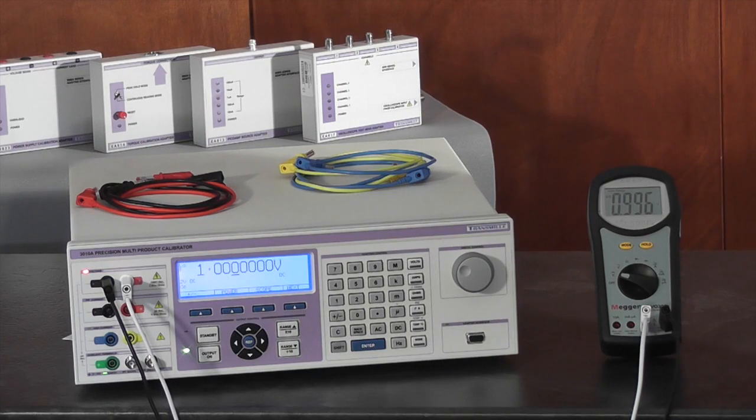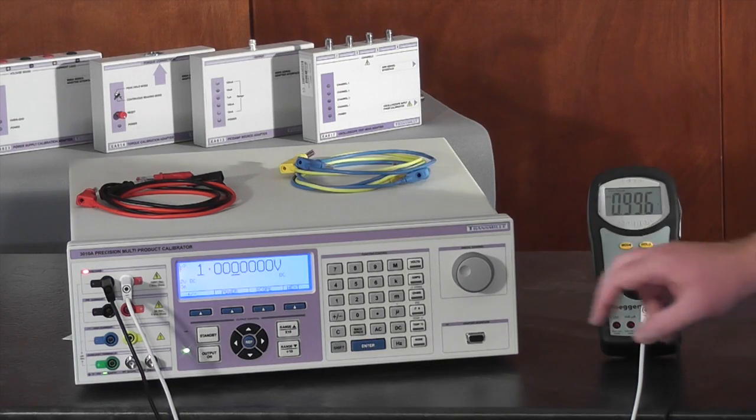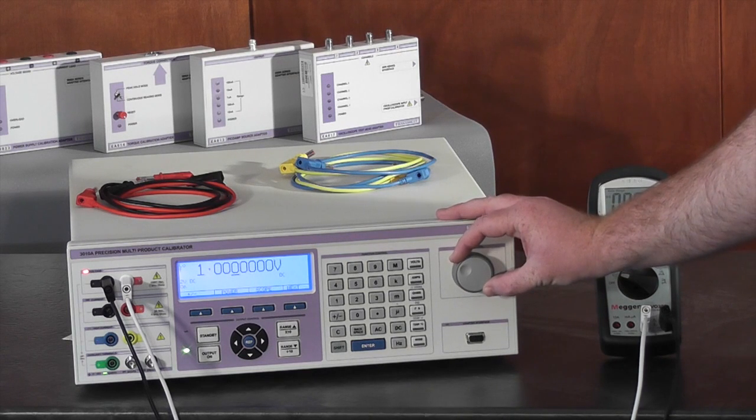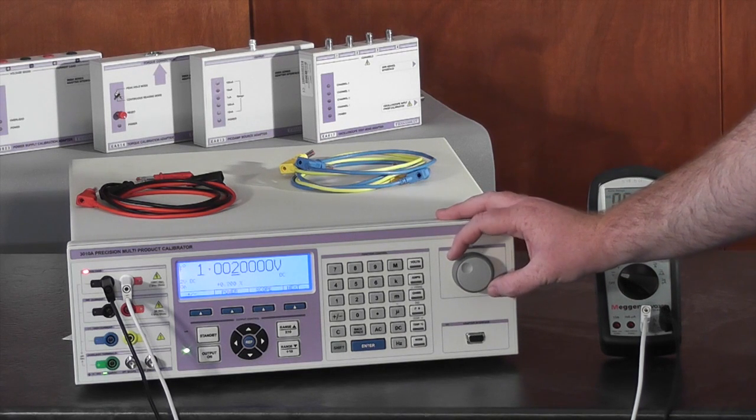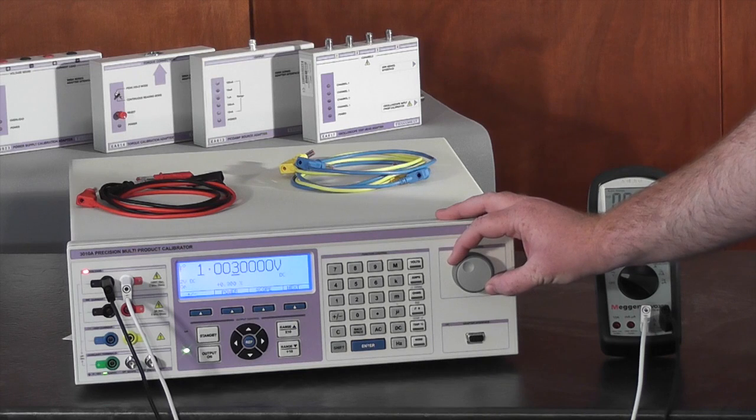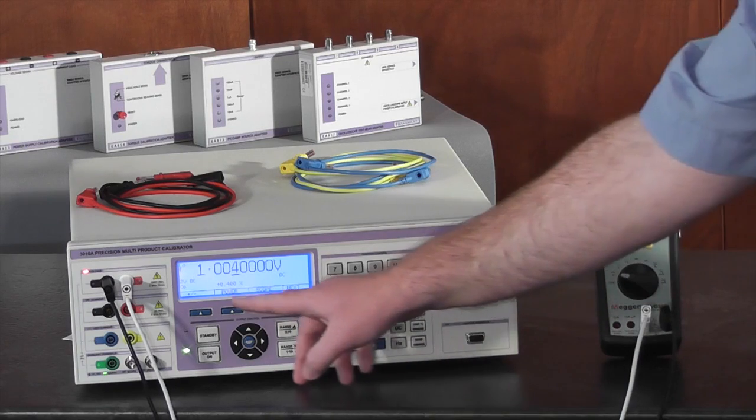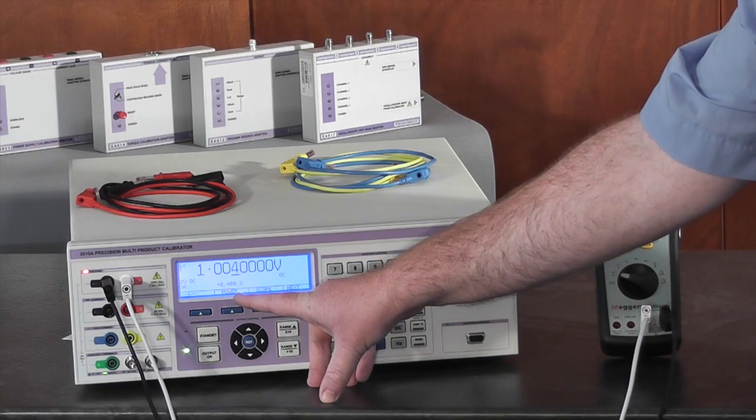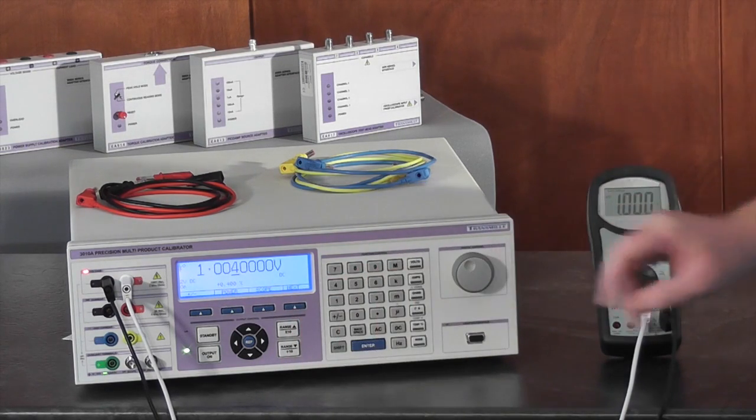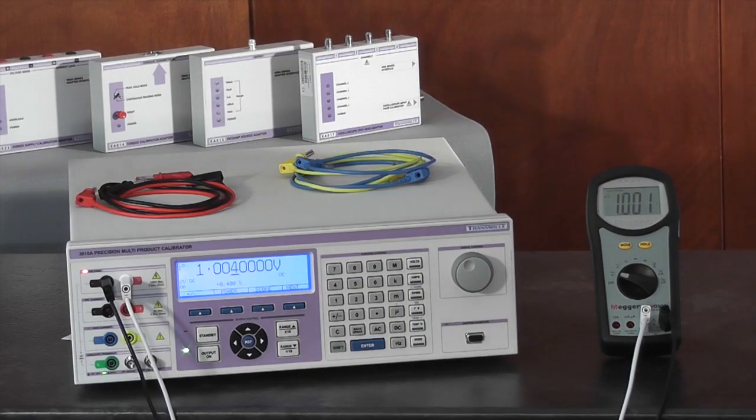To work out the error of the multimeter, you can simply deviate the output of the calibrator until the multimeter reads the correct value. This multimeter has an error of 0.4%. We will now proceed to testing AC voltage.